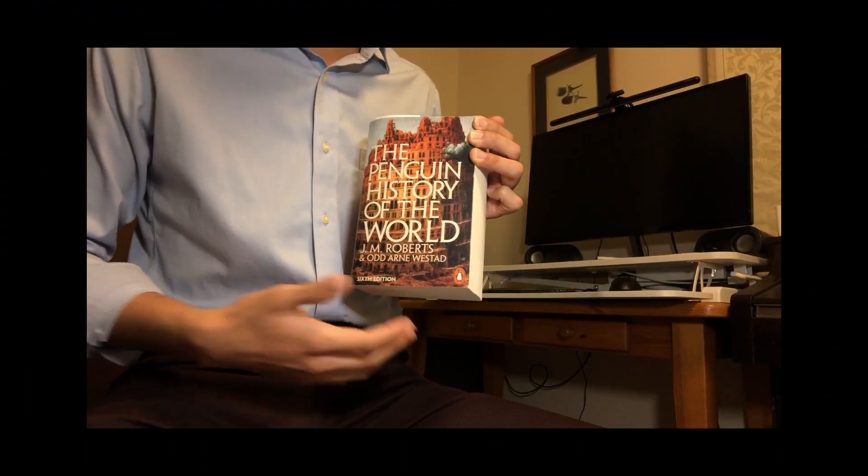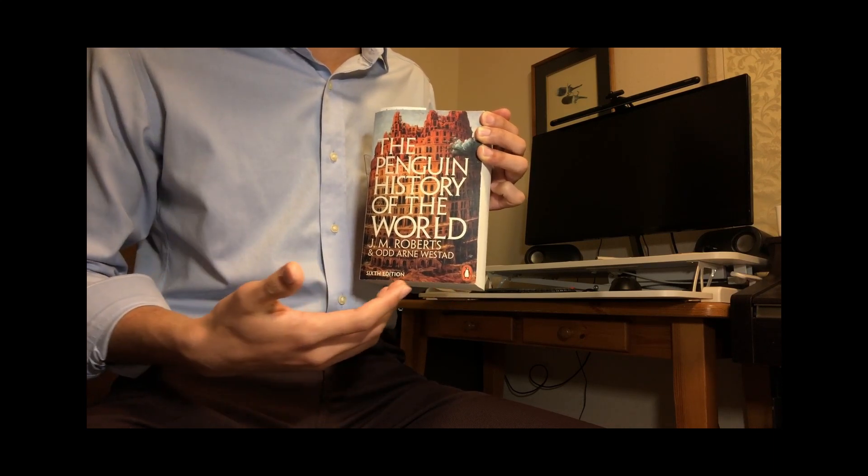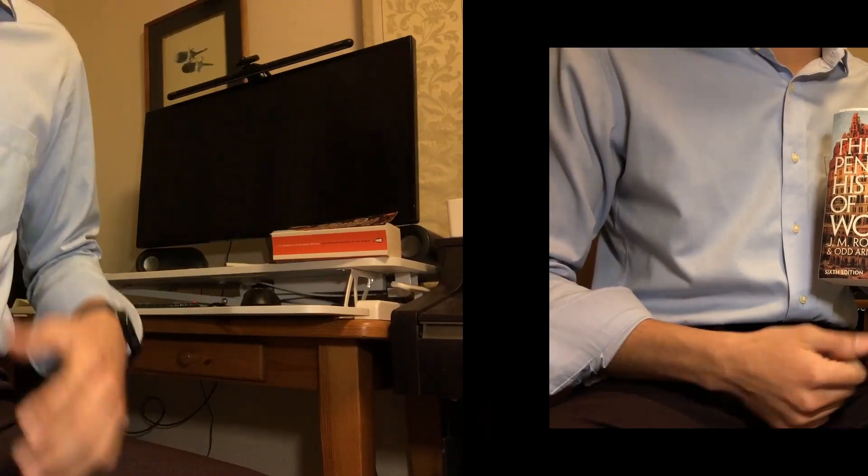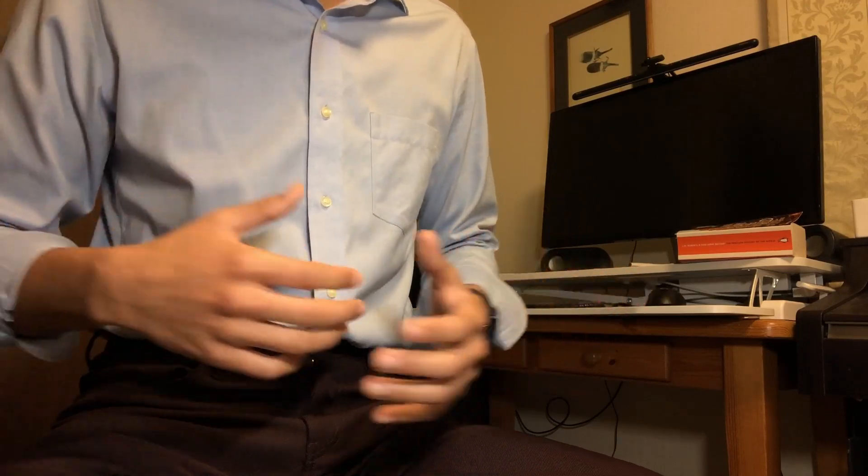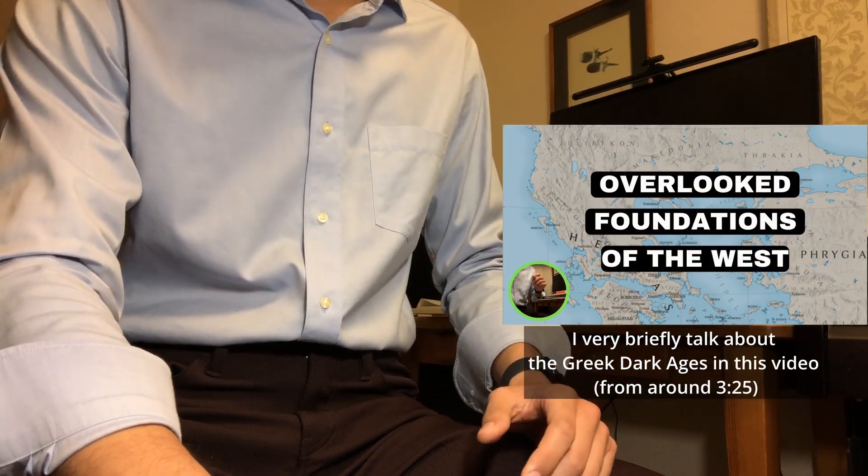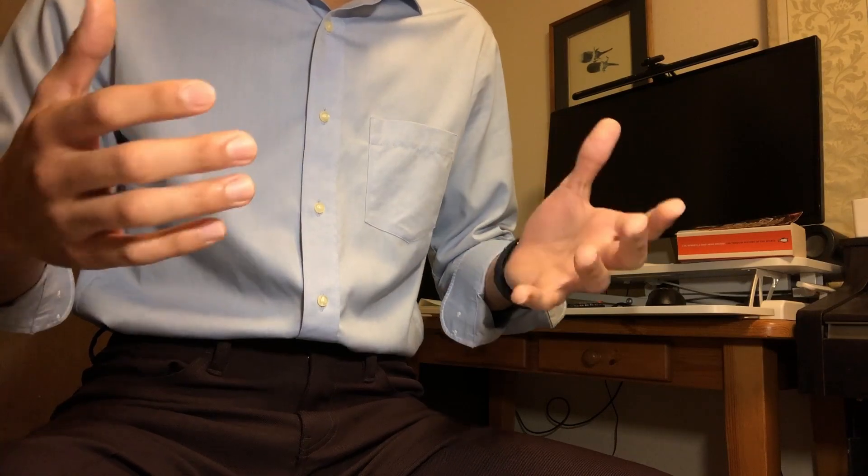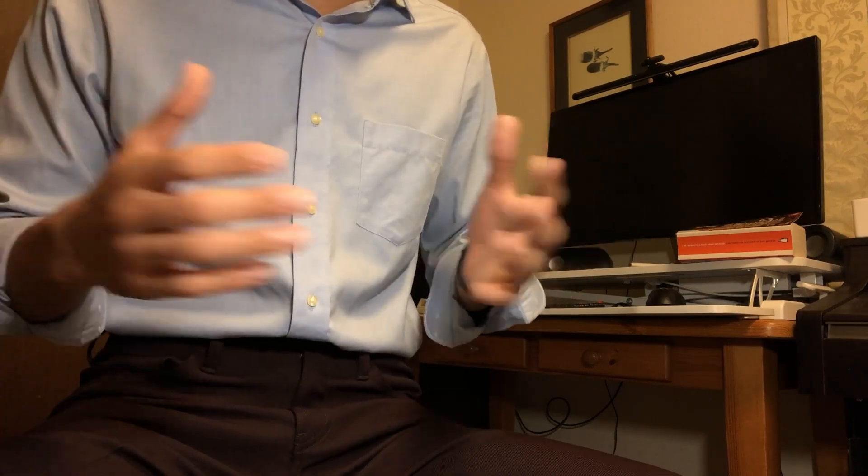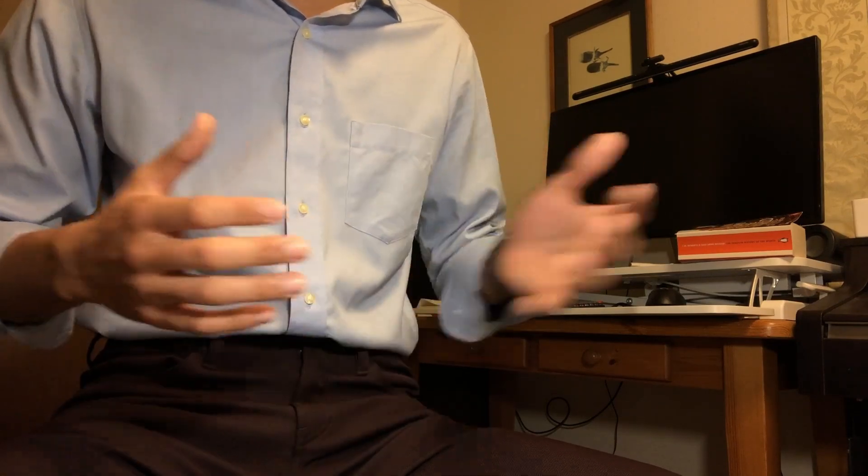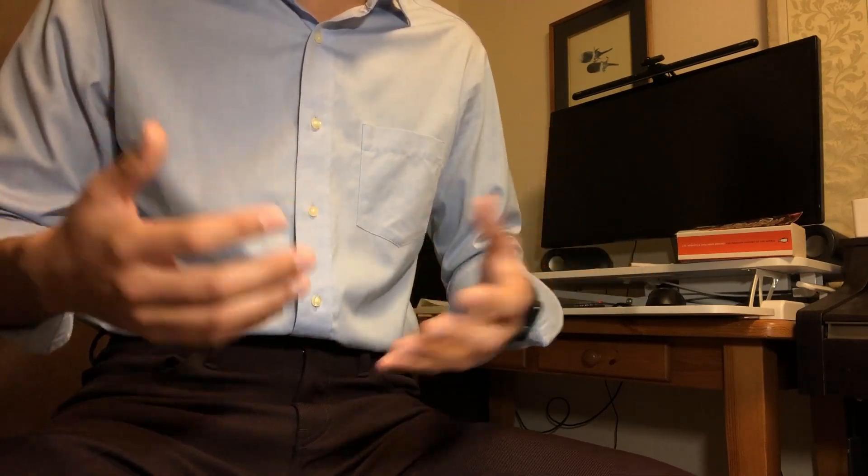A lot of my information comes from this book called The Penguin History of the World, and you can check it out in my description box. I'll now talk about Greek history starting from the end of the Greek Dark Ages. The end of the Greek Dark Ages marked a significant transition as the Greek city-states emerged from centuries of economic, social, and political instability to develop a new, more structured society.